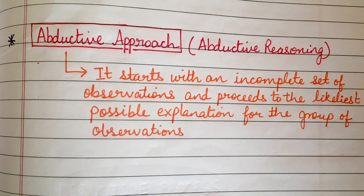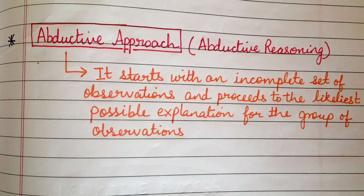In an abductive approach, the research process starts with surprising facts or puzzles, and is devoted to explaining them. These surprising facts may emerge when a researcher encounters a phenomenon that cannot be explained by the existing range of available theories. When following an abductive approach, the researcher seeks to choose the best explanation among the many available options to explain those surprising facts or puzzles.